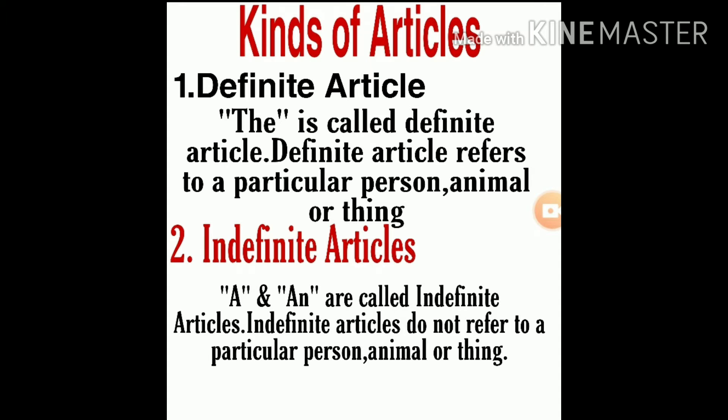Next, kinds of articles. There are two kinds of articles: definite article and indefinite article. 'The' is called the definite article. The definite article refers to a particular person, animal, or thing. 'A' and 'an' are called indefinite articles.